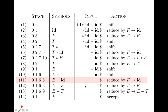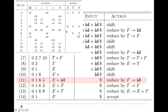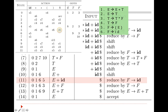Then we have 5 and dollar. 5 and dollar gives reduce by rule number 6. So it reduces by f gives id. Id gets replaced by f and state 5 gets popped from the stack. We then refer to 6 and f, which gives state 3. So 3 gets pushed onto the stack.